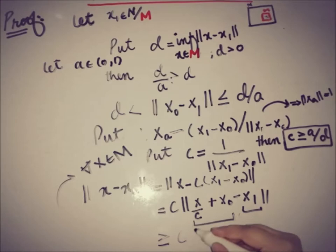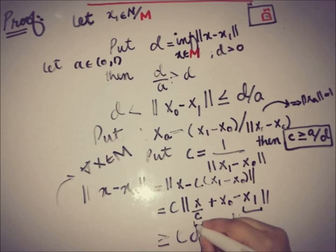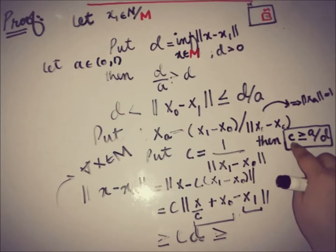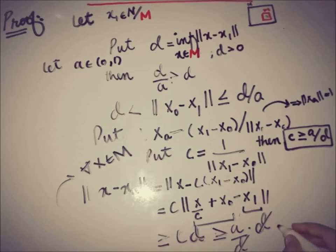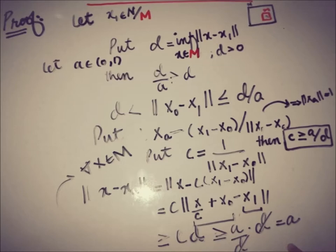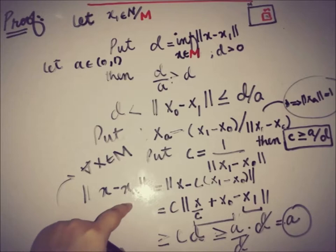Therefore ‖x − x_a‖ ≥ c · d ≥ (a/d) · d = a. So the norm of the difference x − x_a is greater than or equal to a, for all x in M. This is exactly what we needed: an element x_a in N with ‖x_a‖ = 1 and ‖x − x_a‖ ≥ a for all x in M. This completes the proof of Riesz's Lemma in functional analysis.